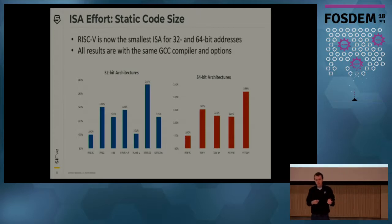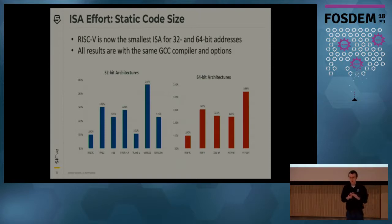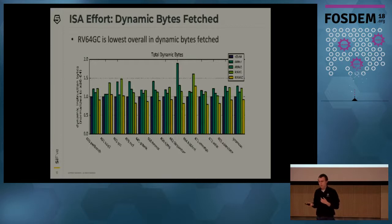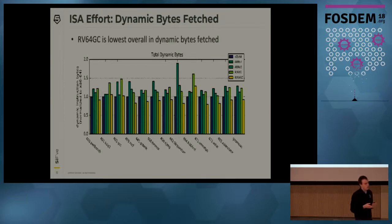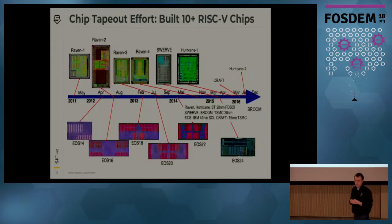The ISA is designed to scale from microprocessors to supercomputers. One of the most important metrics for a microprocessor ISA is the static code size. RISC-V has the smallest static code size across all instruction sets. An important metric for supercomputer implementations is the number of dynamic bytes fetched. RISC-V has the smallest number of dynamic bytes fetched across all instruction sets. It's smaller than x86 and 25% smaller than ARM.